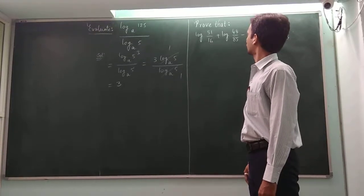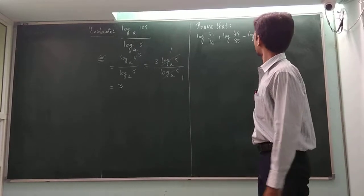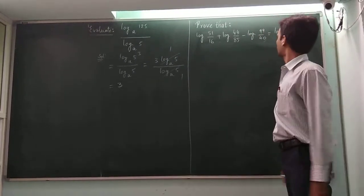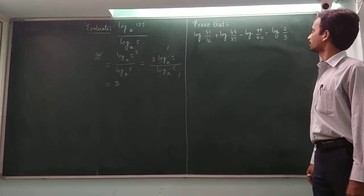Log 51 by 16 plus log 44 by 85 minus log 99 by 40 is equal to log 2 by 3. This statement we have to prove here.